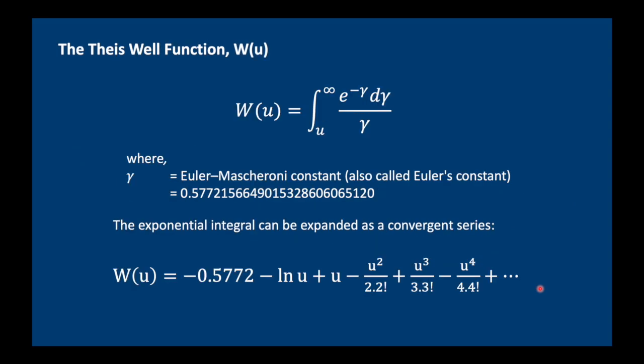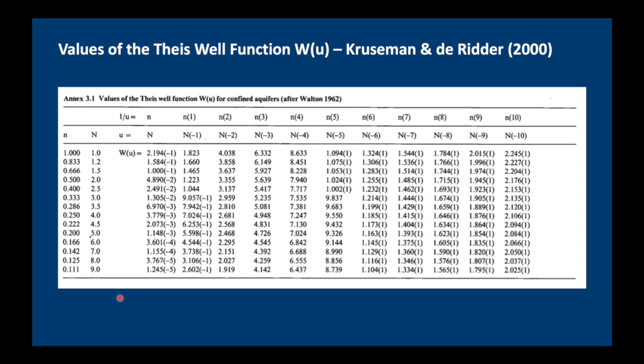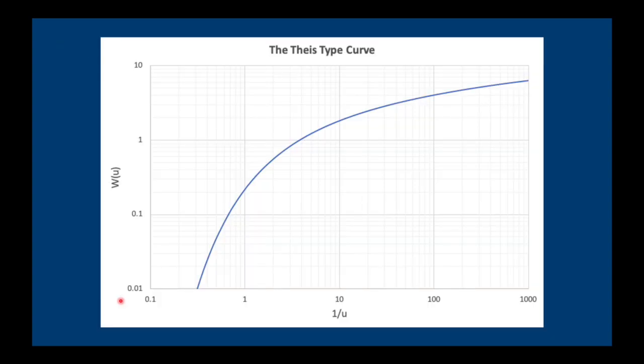The Theis well function is an exponential integral which includes Euler's constant and it can be expanded as a convergent series as shown here. Now I don't want to go into any details but I just like you to appreciate that the well function is quite difficult to calculate if all you have is a calculator or pencil and paper. So in the old days what we would do is go to the appendix of our book, for example, Kruseman and de Ridder and get the Theis well function from the table there and plot it up on log-log paper.